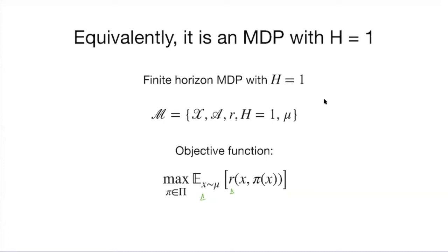Think about this like the LQR problem where you only need to make one decision per round. You make one decision today, tomorrow you reset and repeat. The context is always sampled from this distribution — there's no Markov transition. You make one decision, receive a reward, you're done today. Tomorrow, repeat the process.